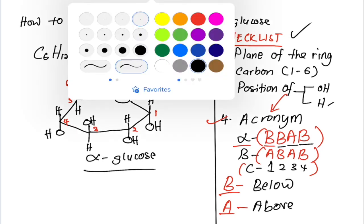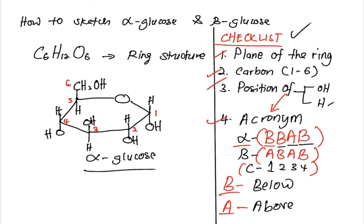Now we double check. Make sure that all lines are accurately pointed to the right atoms or right group. For example, carbon number one — the carbon will attach to the hydrogen and oxygen of the hydroxyl. And double check for carbon number five, it attaches to hydrogen and carbon number six, all in the right position. So this is our alpha glucose. The hydroxyl group at carbon number one will be positioned below the plane of the ring.